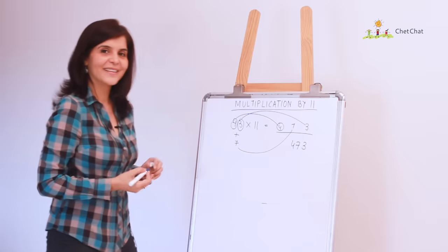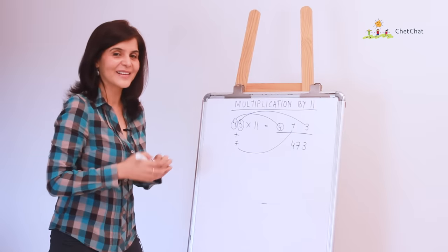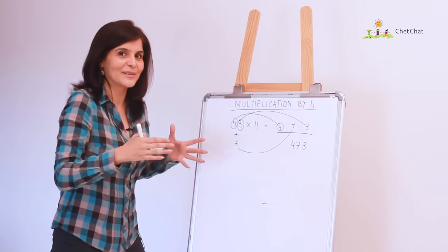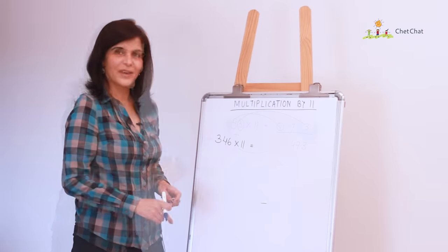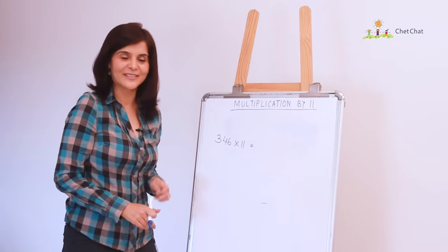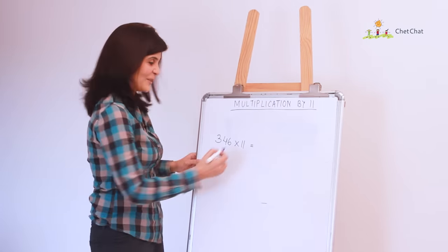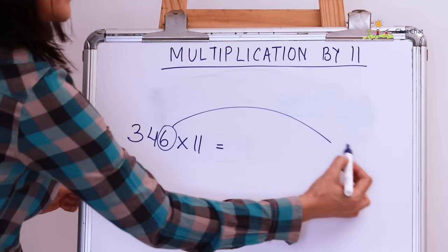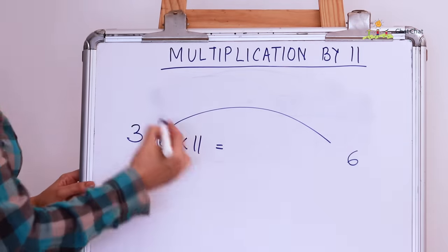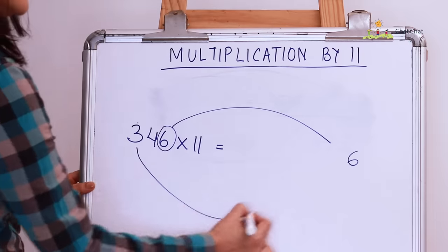Now, that sounds too easy. So, let's take a little complicated example to see if that really works. Okay, we've got a bigger number here. 346 by 11. Let's see how it goes. So, the units place is 6.